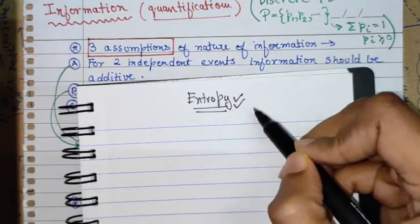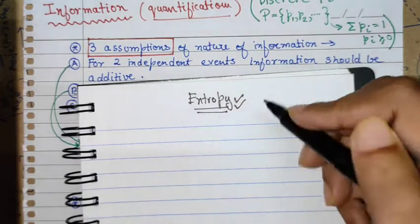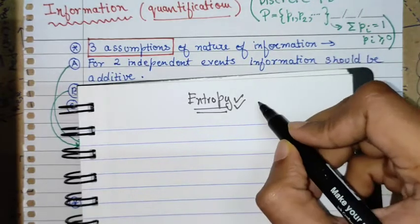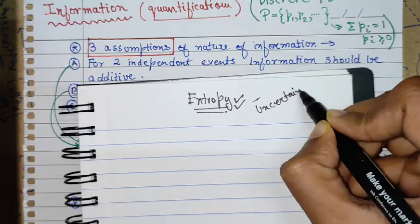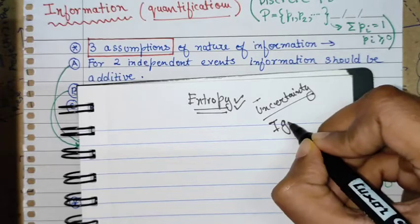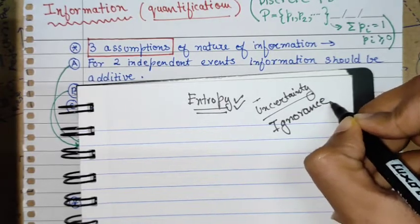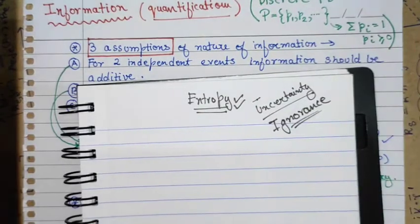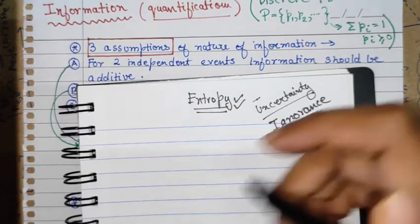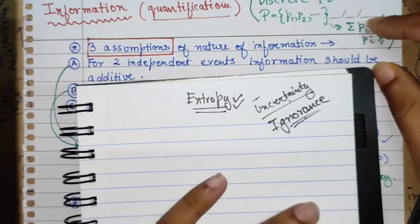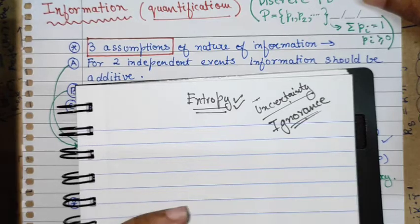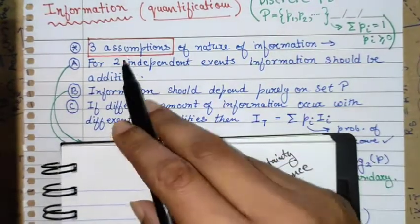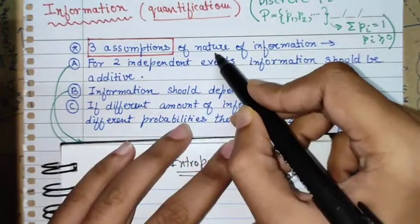For such cases, we define something similar to entropy but from an information-theoretic point of view. We ask: what is the uncertainty, or what is the ignorance, associated with a random variable? Terms like disorder or disorderness are not proper quantifications. So to give a rigorous definition of entropy, we start with some assumptions.